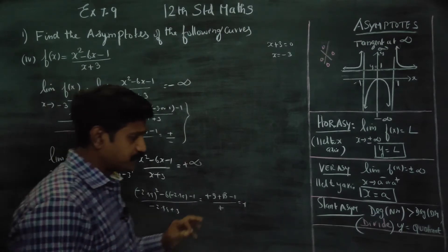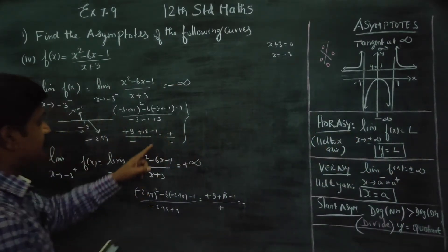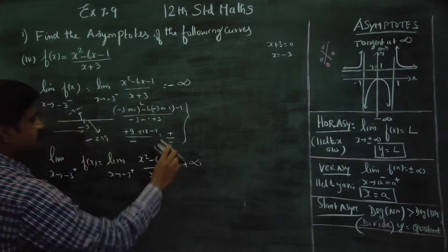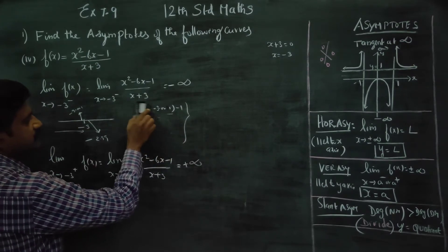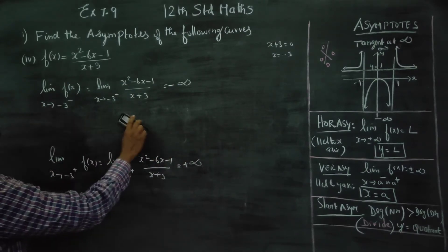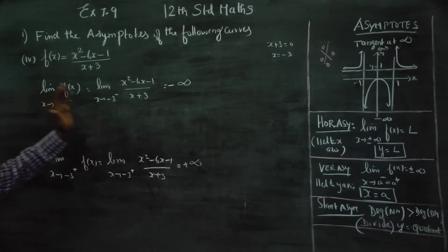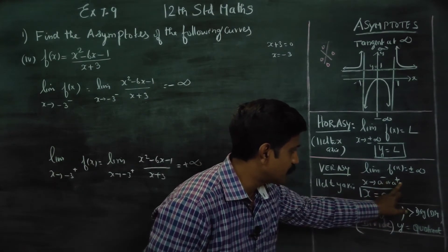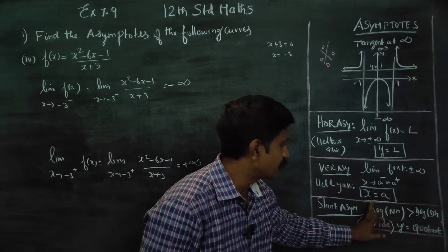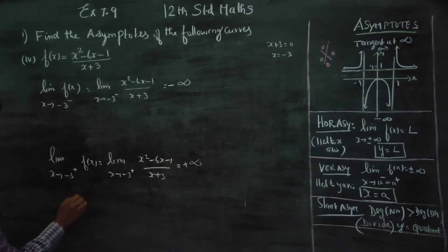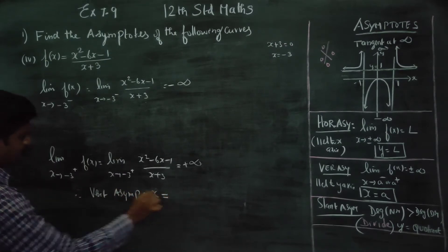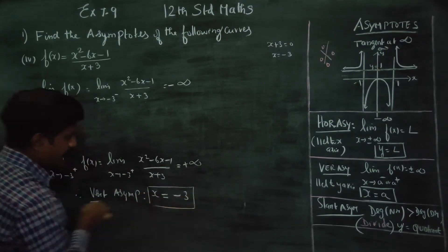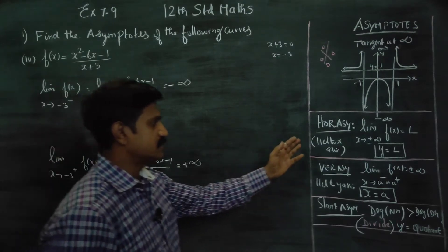We have found that as x approaches minus 3, f(x) goes to plus infinity or minus infinity. After finding these values — the left-hand limit giving minus infinity and the right-hand limit giving plus infinity — therefore x equal to A is your vertical asymptote. Therefore, my vertical asymptote is x equals minus 3.